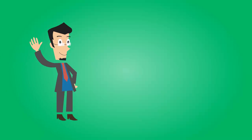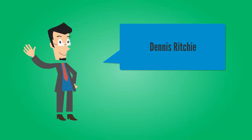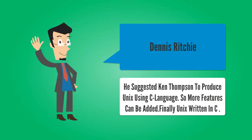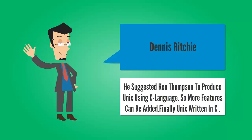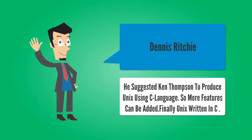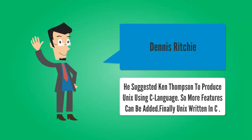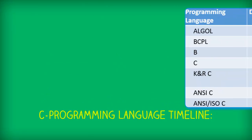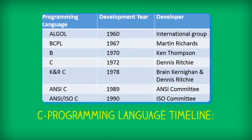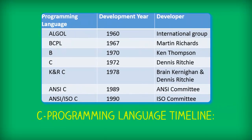Dennis Ritchie suggested Ken Thompson reproduce the UNIX operating system using C language so that more features could be added. The biggest feature was the portability of the UNIX system, and so UNIX was reproduced in C language. The timeline of C language follows from there.